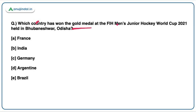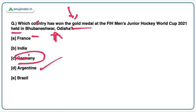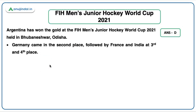Which country has won the gold medal in the FIH Men's Junior Hockey World Cup 2021, held in Bhubaneswar, Odisha? Since it was held in India, this Junior World Cup is very important. Argentina won the gold medal by defeating Germany — a very strong player in hockey — which makes it a huge feat for Argentina. France and India finished at the third and fourth positions respectively. Do remember the venue of this Hockey Championship.